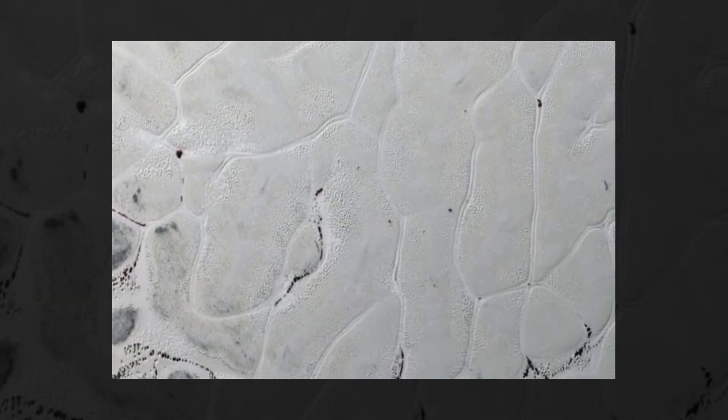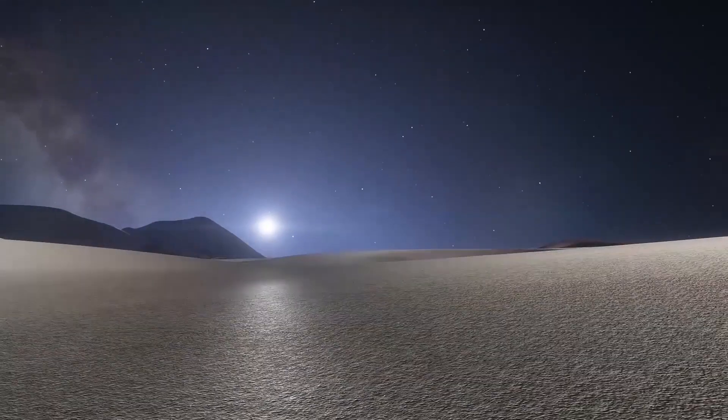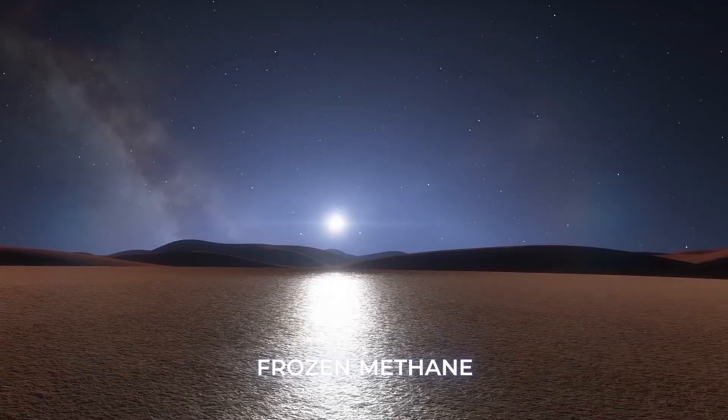The surface of the plain is crisscrossed by irregularly shaped polygonal structures, evidence of slow-moving convection happening in the ice below. These barren glacial plains of Pluto are covered in windswept dunes, made not of sand, but frozen methane snow.